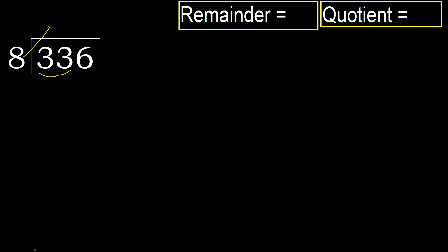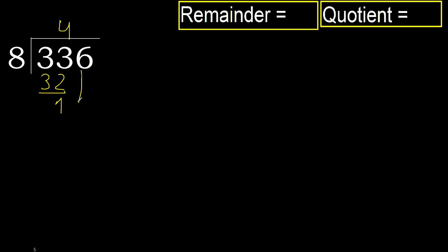8 multiplied by which number is nearest to 33 but not greater. 8 multiplied by 5 is 40, which is greater. Multiplied by 4, 32 is not greater, ok. Subtract: 33 minus 32 is 1. Next.